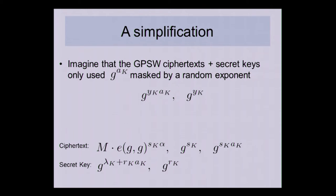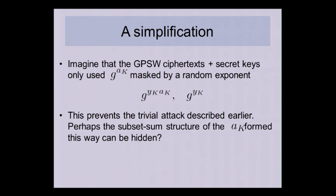In this simplified version, the way a_k is used in both the ciphertext and secret key takes the general form g^(y_k · a_k) and g^(y_k), where y_k is an independent random exponent per k. If you're given these and asked to tell whether the a_k are subset-sum structured or independently random, you can no longer use the same trivial attack of adding elements together to check. And so you might hope they're really hidden — and that turns out to be kind of the case.